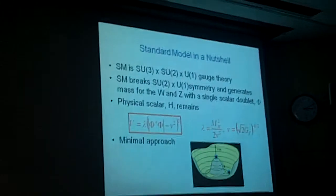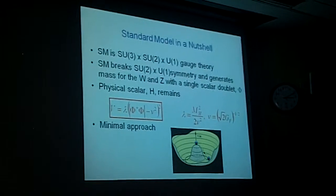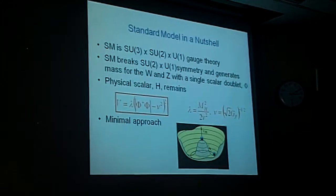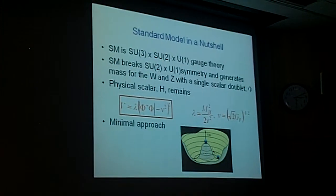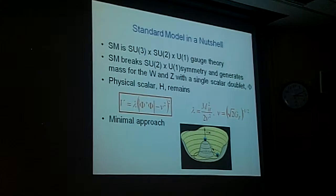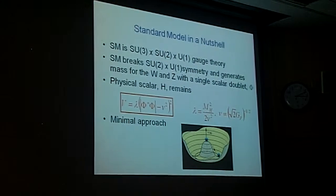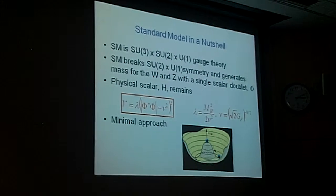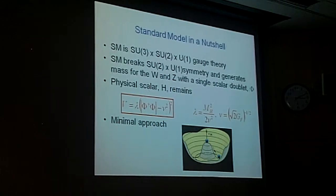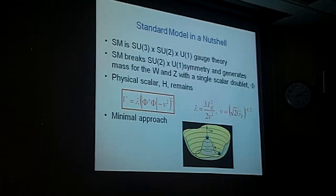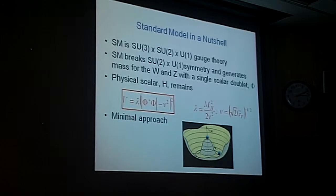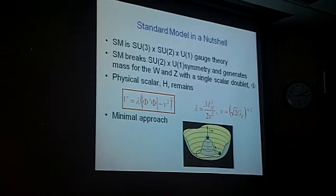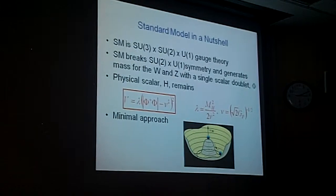The standard model in a nutshell. Standard model is an SU(3) cross SU(2) cross U(1) gauge theory. I won't talk about SU(3) at all. That's the strong interactions. The SU(2) cross U(1) gauge theory is the electroweak part. And the standard model breaks this SU(2) cross U(1) symmetry and generates a mass for the W and Z bosons, which is what we were hearing about earlier, by using a single scalar doublet, which I've called phi.